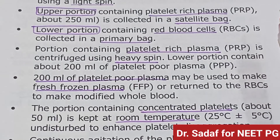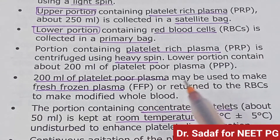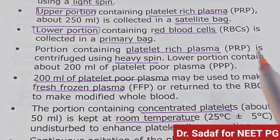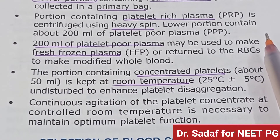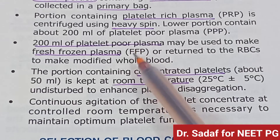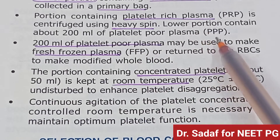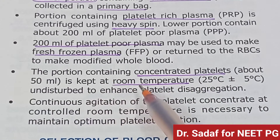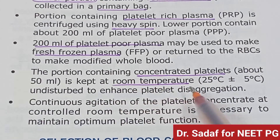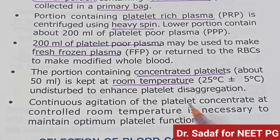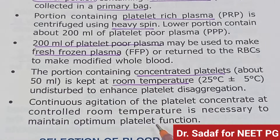The 200 ml platelet-poor plasma is used to prepare fresh frozen plasma and is returned with RBCs to create modified whole blood. The remaining approximately 50 ml containing concentrated platelets is kept at room temperature, undisturbed, to enhance platelet disaggregation. Continuous agitation of the platelet concentrate at controlled room temperature is necessary to maintain optimum platelet function.